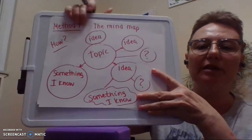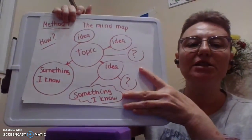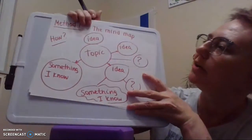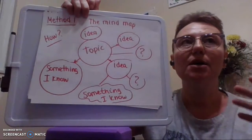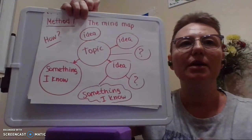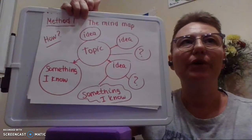The first method is called the mind map. This is for mostly non-linear thinkers. People who are non-linear thinkers don't like things like outlines or structure when they're thinking. So this is very perfect for you.